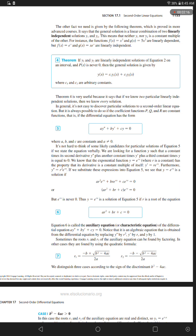It's not hard to think of some likely candidates for particular solutions of equation 5 if we state the equation verbally. We are looking for a function y such that a constant times its second derivative y double prime plus another constant times y prime plus a third constant times y is equal to 0. So, we know that the exponential function y equals e to the power rx, where r is a constant,